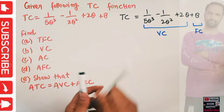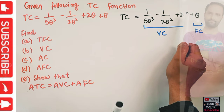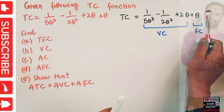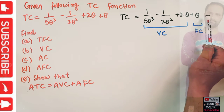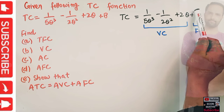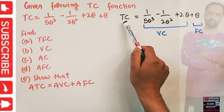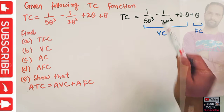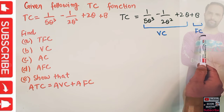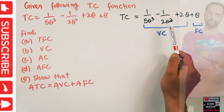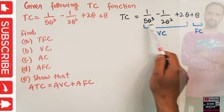Why? Because total cost will change with the change in output, since q appears in each of the first three terms. And fixed cost is 8 — it does not depend upon the level of output. Whether the output is 0 or anything, fixed cost will remain the same. The first three terms depend upon q, but the last term does not, so it is the fixed cost, and the first three terms are the variable cost.